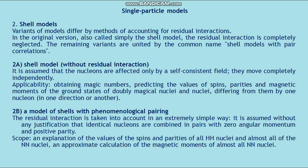Shell model variant (b): model of shells with phenomenological pairing. The residual interaction is taken into account in an extremely simple way — it is assumed without justification that identical nucleons combine in pairs with zero angular momentum and positive parity. Applications include explanation of the spin and parity values of all even-even nuclei and almost all odd-A nuclei, and approximate calculation of the magnetic moments of almost all odd-A nuclei.